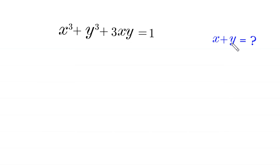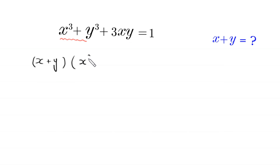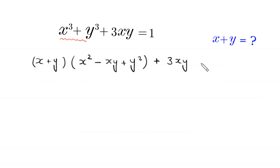Let's start. x cubed plus y cubed can be factorized as x plus y times x squared minus x y plus y squared, plus c times x y is equal to 1.